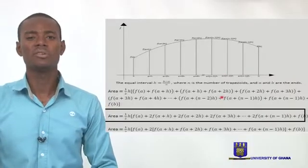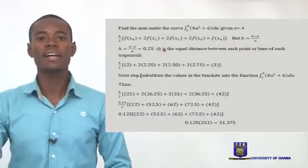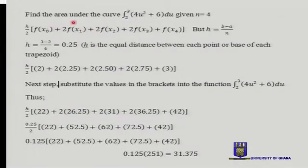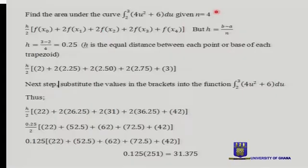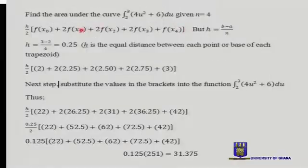Let's see how we apply this rule to estimate the area under a curve. Supposing I have a function representing a curve, and it says find the area under the curve between the interval 2 and 3, given that n is 4. This n is telling you the number of trapezoids that should be formed under that curve between the interval 2 and 3. This is the formula we need from the previous explanation.